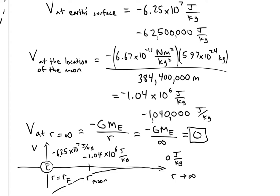We can find gravitational potential energy from gravitational potential using the formula Ug equals m times Vg, where m is the mass in the field.